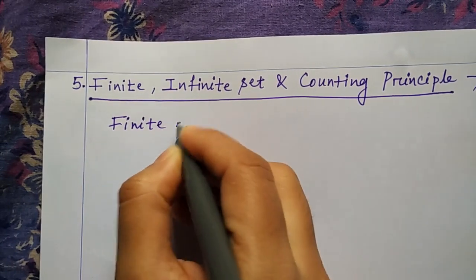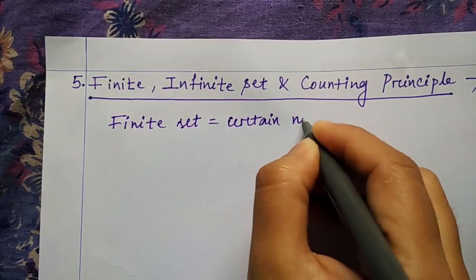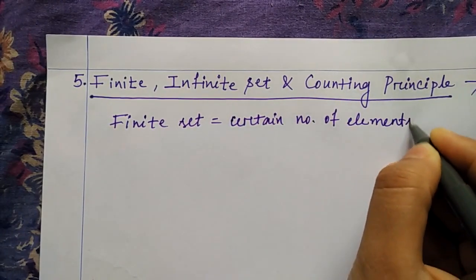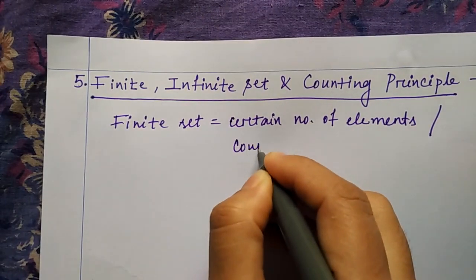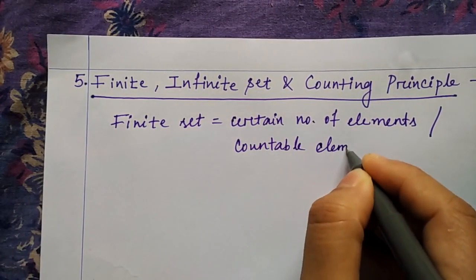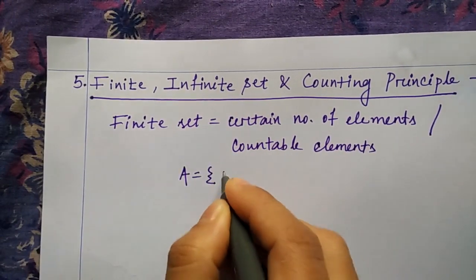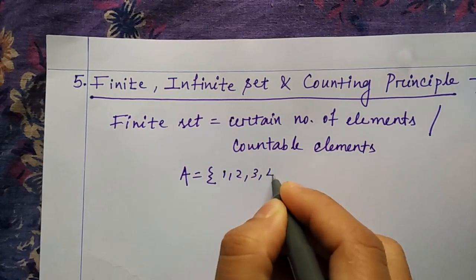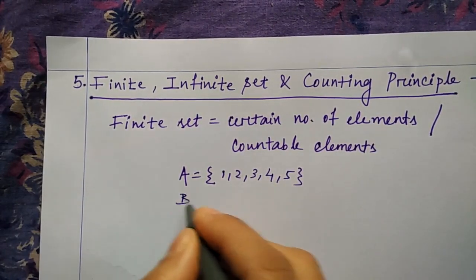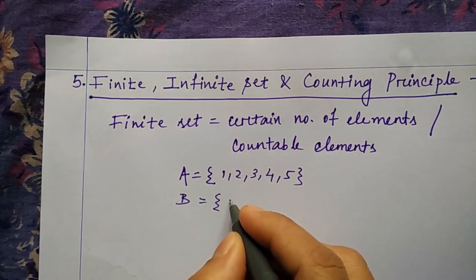So we'll see what is a finite set. A finite set means one which has a certain number of elements, or you can say countable elements. For example, let A be a set where I have {1, 2, 3, 4, 5} — you can count the number of elements present here.